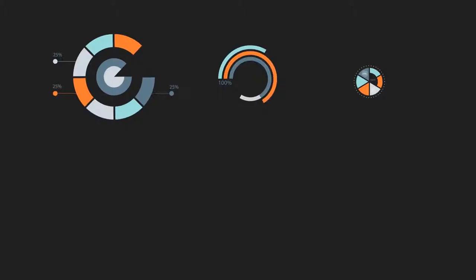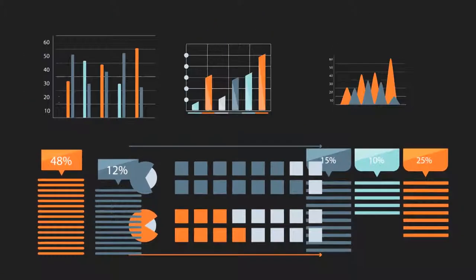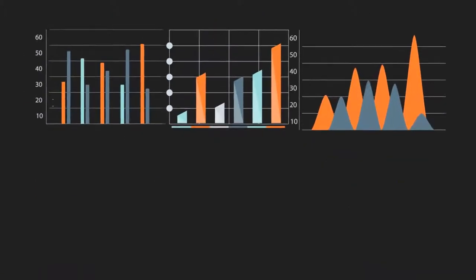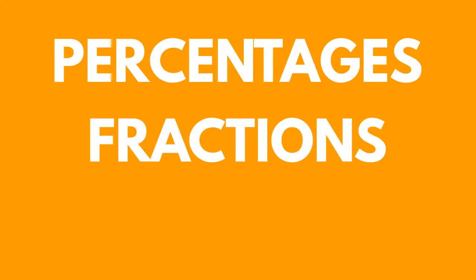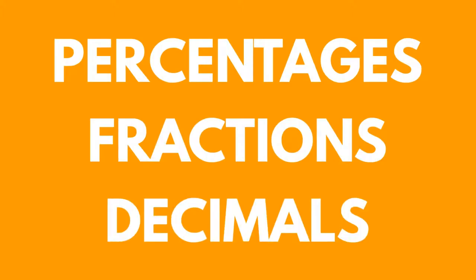We may also use space diagrams, charts or graphs. Probability can be written as percentages, fractions or decimals.